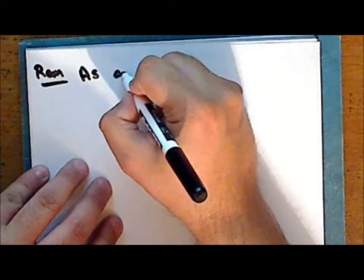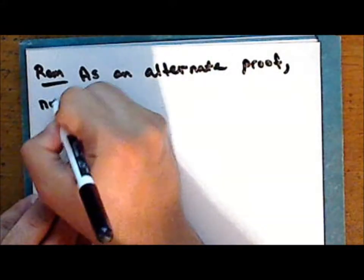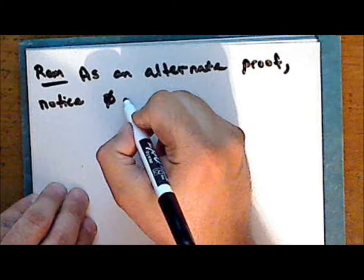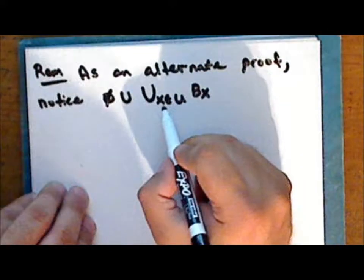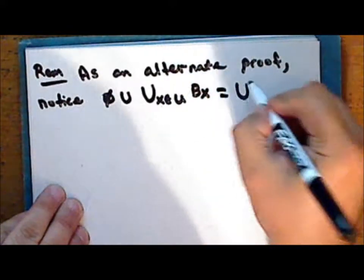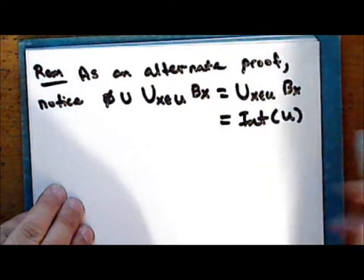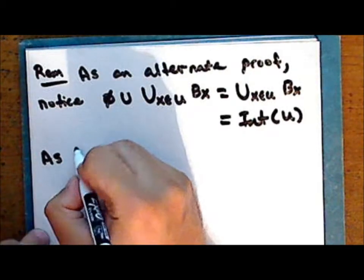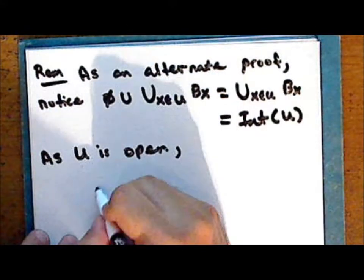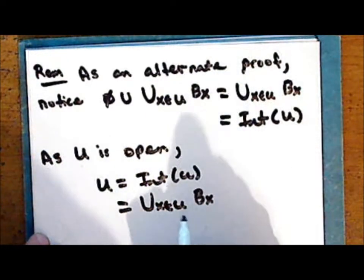As an alternate proof, notice that the union of the empty set together with the union of all elements B_x containing points x in U is the union of these elements, which is the interior of the set U — since this is a union of all open sets contained in U. And as U is open, U equals its interior and so equals the union of all basis elements containing points of U that are also subsets of U.